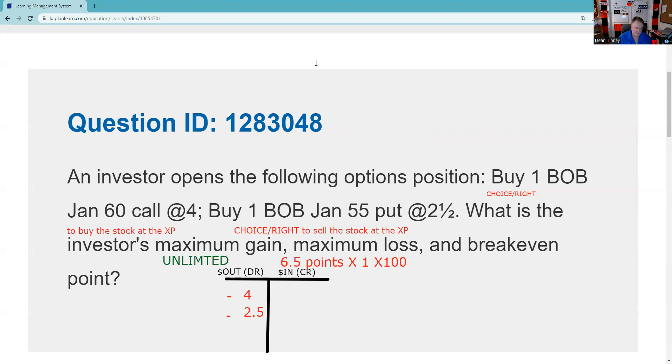6.5 points or $650. By the way, on the test, they won't give you the choice between both the points and the 600, it would be one or the other. So maximum loss is $650. We have two breakevens. We have our upside breakeven, we have our downside breakeven. Strike price plus total premium. Our upside breakeven is 66.5. Our downside breakeven is 48.5. And you might want to just make a little note to yourself where we want this to be in relationship to the breakeven. We want it above 66.5 or below 48.5 to cover our pocket costs and start to make some money.